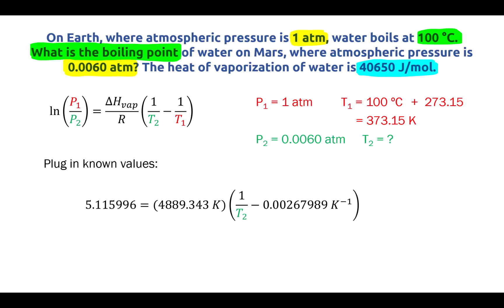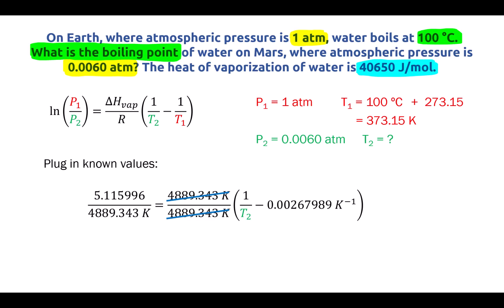In order to rearrange this, I'm going to have to bring the 4889.343 to the other side of the equation. So I'm gonna divide it out of both sides, get rid of it on the right, and bring it over to the left side. That's gonna severely simplify my equation so that now once we do that division on the left side, we're gonna end up with a number in Kelvin to the minus 1 that is gonna be much easier to solve for.